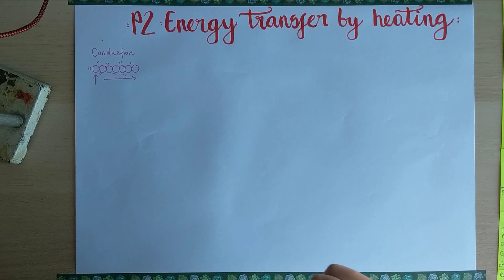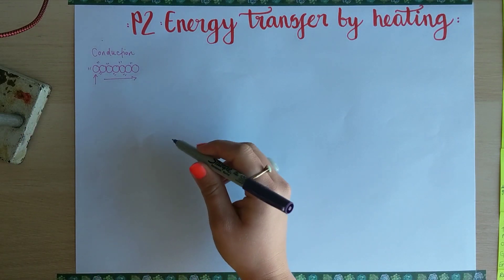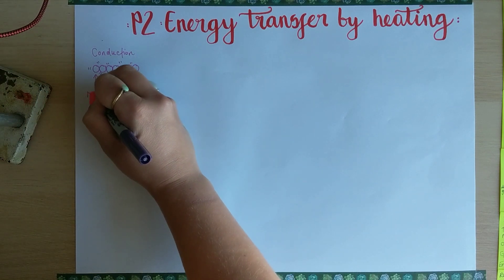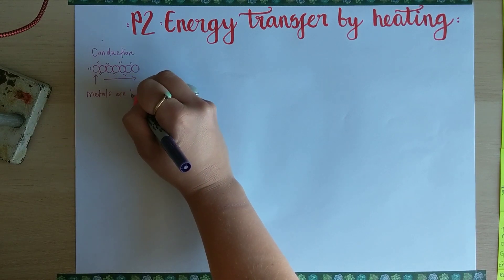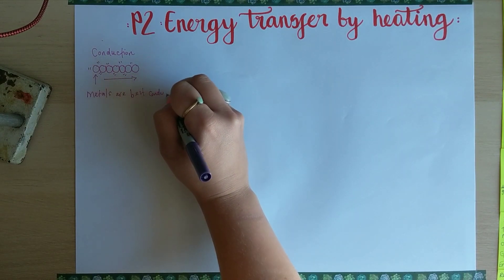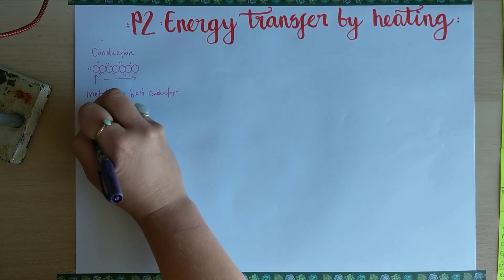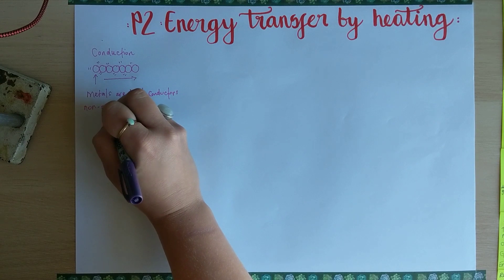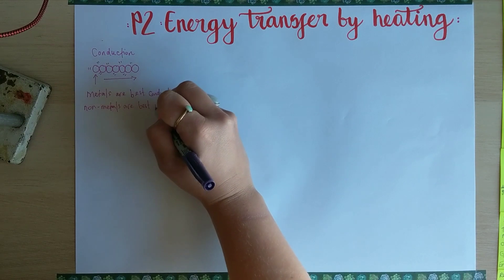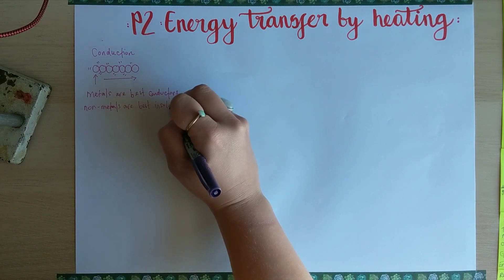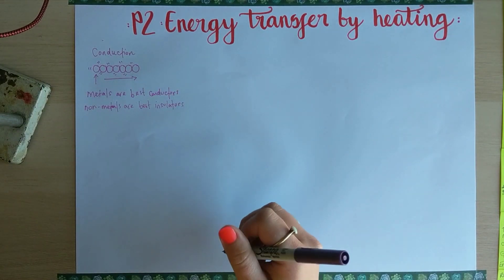We should already know from year seven or year eight that metals are very good conductors — metals are the best conductors. Non-metals are the best insulators, an insulator being something that doesn't pass on thermal energy very easily.